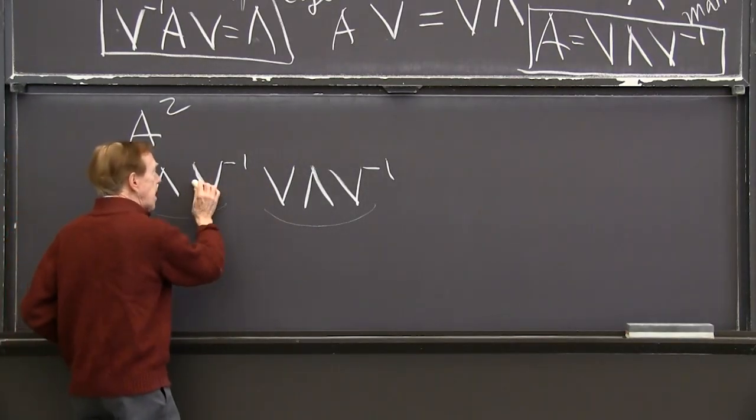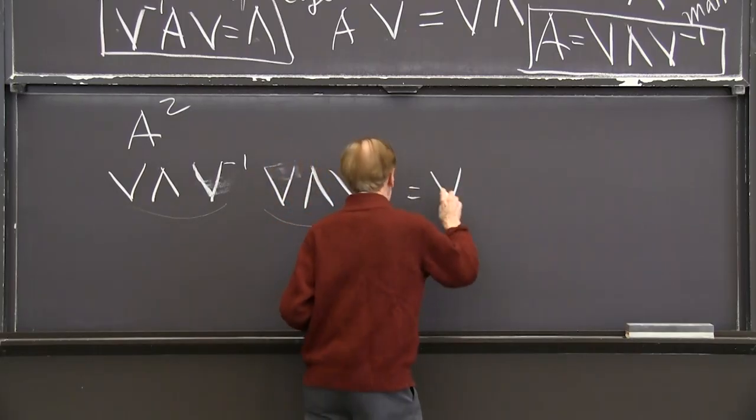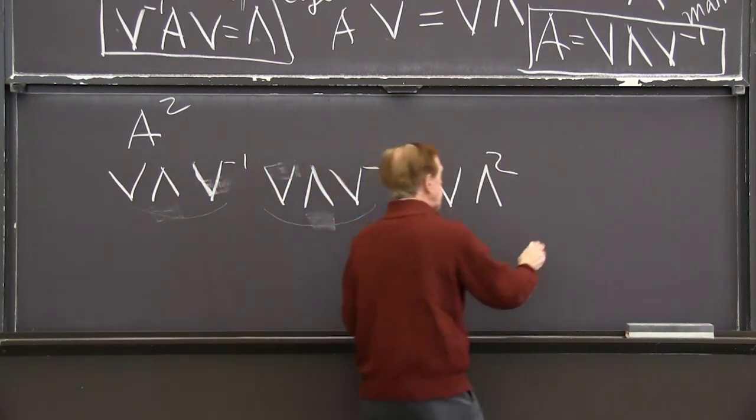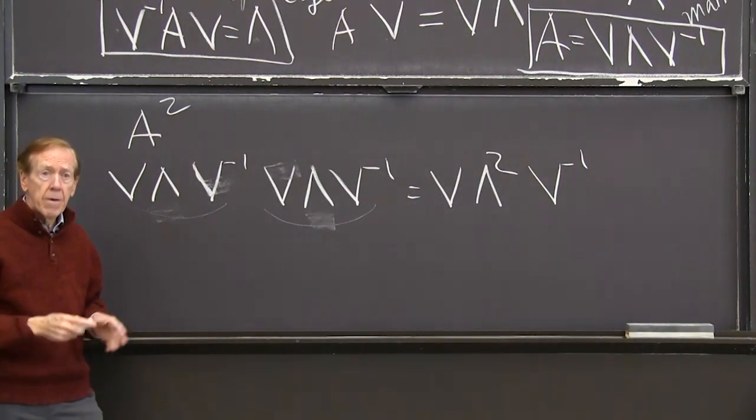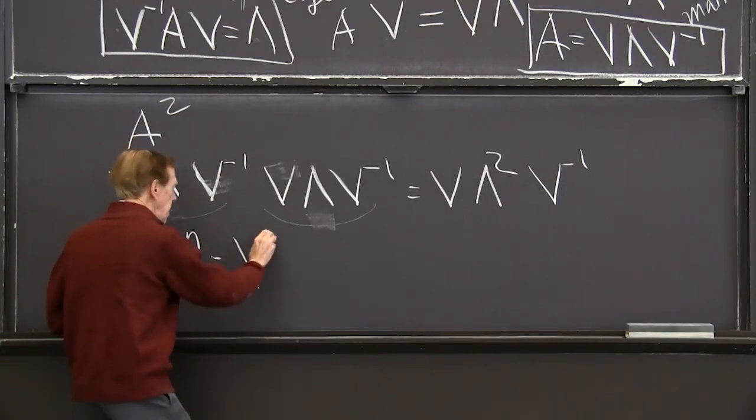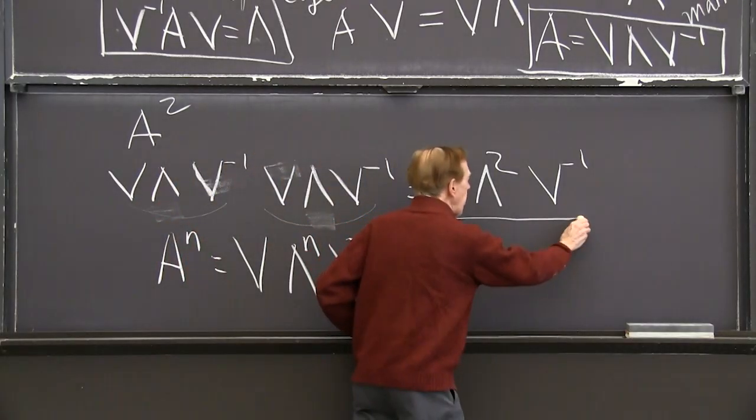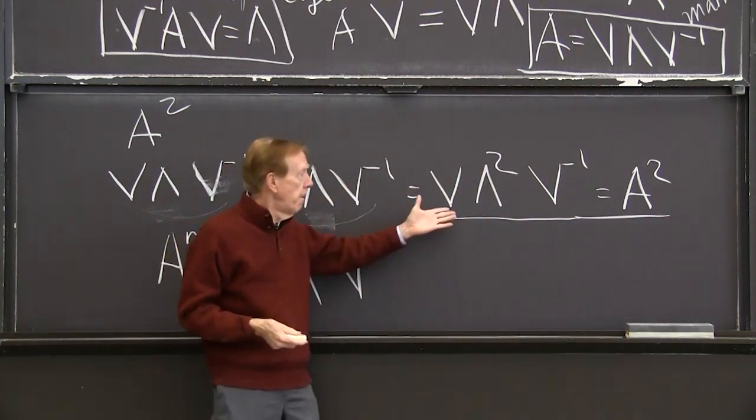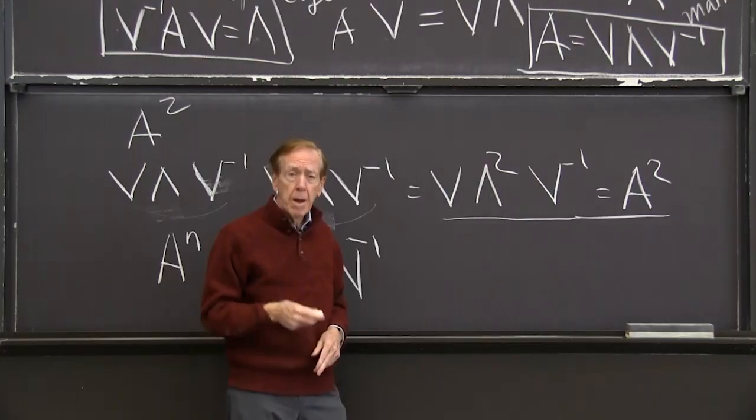V inverse V is the identity. So that's just the identity sitting in the middle. So the V at the far left, then I have the lambda, and then I have the other lambda, lambda squared, and then the V inverse at the far right. That's A squared. And if I did it n times, I would have A to the nth would be V lambda to the nth power V inverse. What is this saying about? This is A squared. How do I understand that equation? To me, that says that the eigenvalues of A squared are lambda squared. I'm just squaring each eigenvalue.